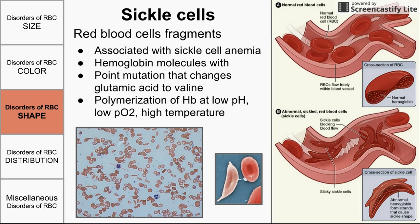Sickle cells are most often associated with sickle cell anemia. A normal red blood cell looks like a biconcave disc. Imagine a polymer — a long stick-shaped molecule — forming inside that disc; it stretches the normally round red blood cell until it looks like a sickle. The polymer is made of hemoglobin molecules. Factors that cause hemoglobin to sickle include low pH, low oxygen concentrations, and high temperatures. The abnormal hemoglobin is caused by a single point mutation in the hemoglobin gene.